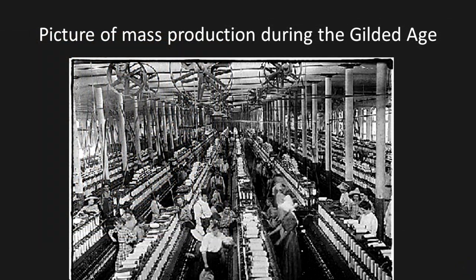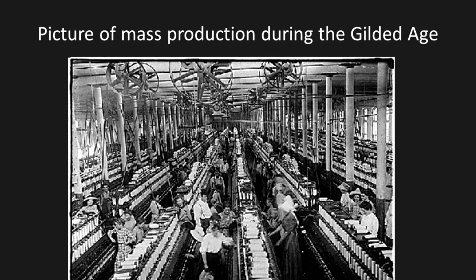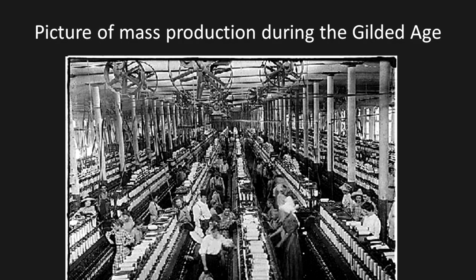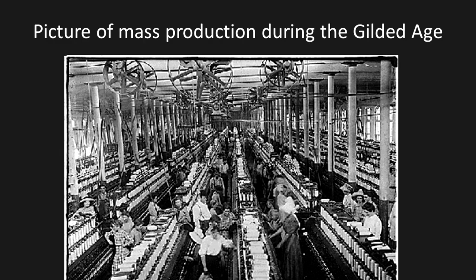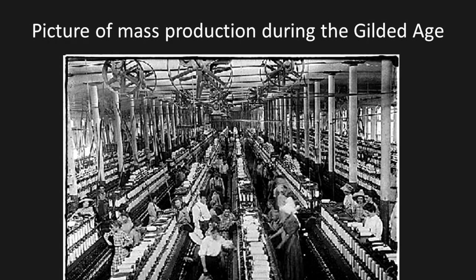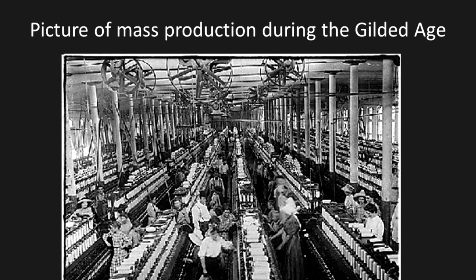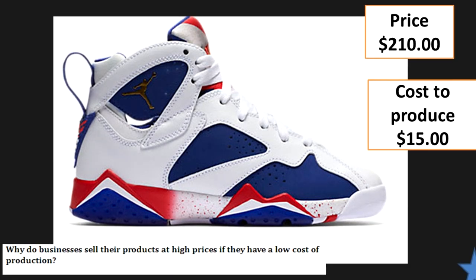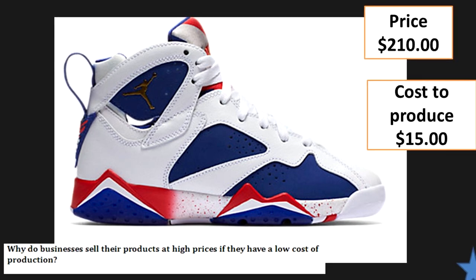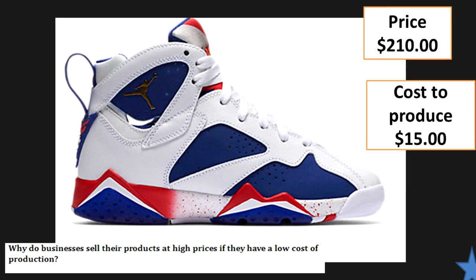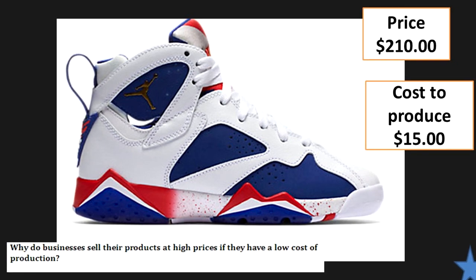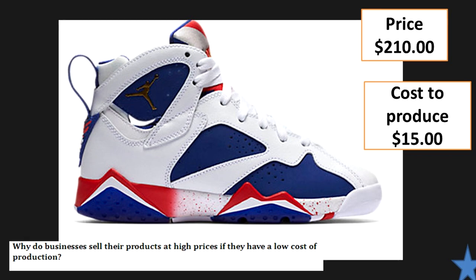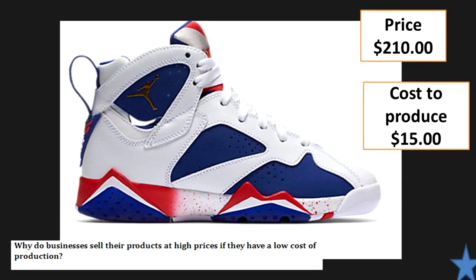This is what a factory would have looked like during the Gilded Age — everything was mass produced. Notice how you have factories now instead of people making things in their homes like cottage industry. Everything is now commercialized and mass produced. There are pros to that: when you mass produce you can make things a lot cheaper. But why do businesses still sell their products at high prices even though they have a low cost of production? For example, these shoes could cost $200 even though they only cost $15 to produce.